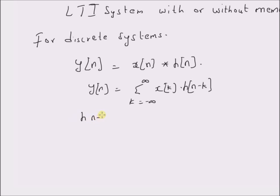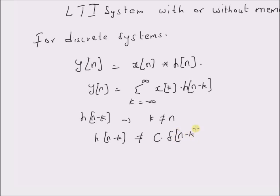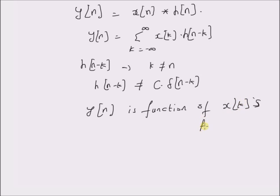So if h of n minus k — that is, the reversed and shifted version of the impulse response h of n — if this signal h of n minus k has values for k not equal to n, that is if h of n minus k is not equal to a constant c multiplied by the impulse signal delta of n minus k, then y of n is a function of x of k for k not equal to n, or for k less than n. That means y of n has memory.